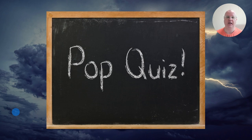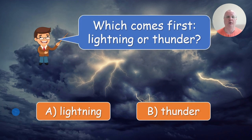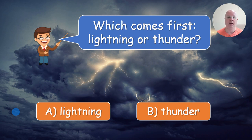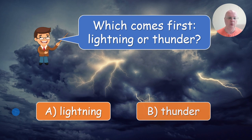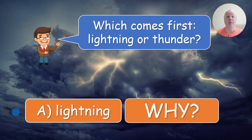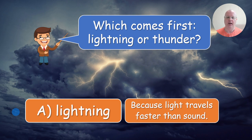Pop quiz! Here we go. In this part, you are going to invite a student from each team and ask them a question. You're going to be giving a few interesting facts about each natural disaster, and when it's done in the form of a quiz, it's easy to remember — it's okay if they don't know the correct answer. Question number one: which comes first, lightning or thunder? The correct answer is lightning. You can ask them why — hopefully someone will tell you it's because light travels faster than sound.